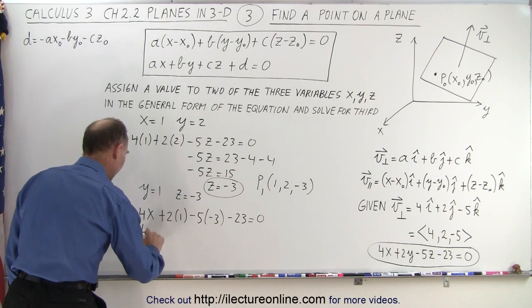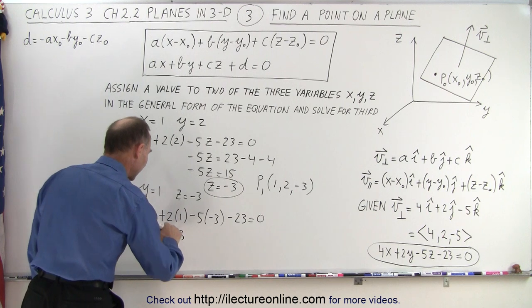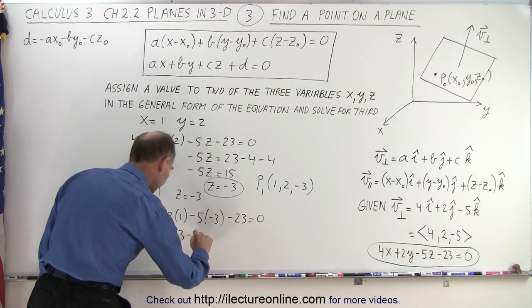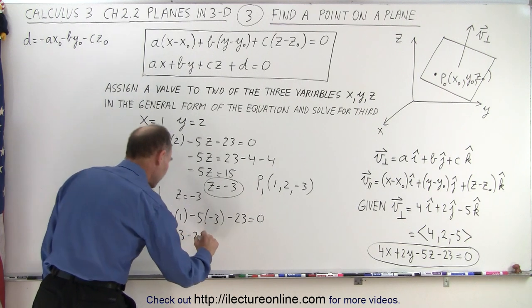So here we get 4x is equal to, bring the 23 across, we get 23, minus 2, and minus times the minus, that's plus, that would be minus 15.